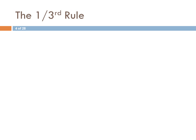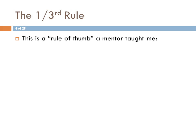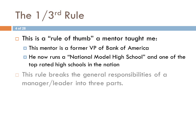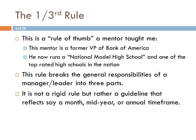Now let's talk about the one-third rule. This is a rule of thumb a mentor taught me — Mark Whitlock, who will hopefully be doing a guest lecture for us later this semester. He's a former vice president of Bank of America who now runs a national model high school considered one of the top-rated in the country. The one-third rule essentially breaks the general responsibilities of a manager or leader into three parts. It's not a rigid day-to-day rule, but rather a guideline that reflects a monthly, mid-year, or annual timeframe.